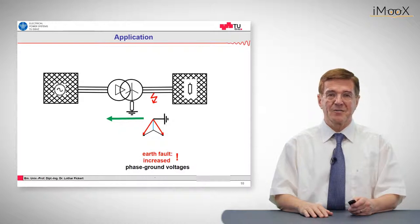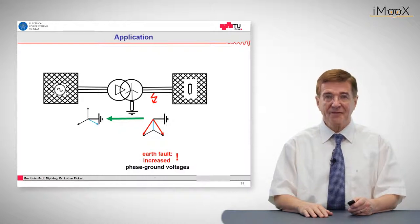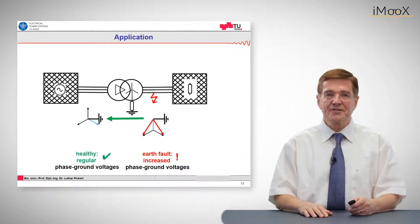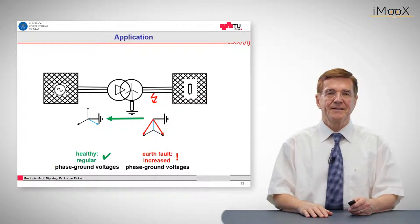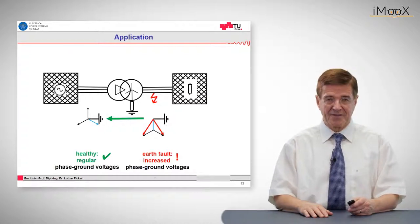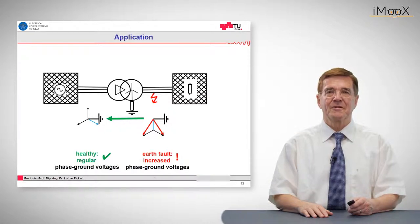which in this case is delta y. So if you have a delta y transformer, the primary side voltage is not disturbed, not afflicted by this fault, and we have healthy and regular phase to ground voltage. And this is the reason why we have transformers with different and adjusted vector groups.